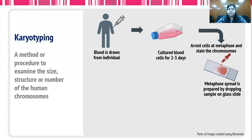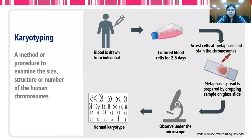Stains like Giemsa stain could be used. After that, the metaphase spread is prepared by dropping the sample on a glass slide so that all the chromosomes are spread out on the slide and can be visualized easily.